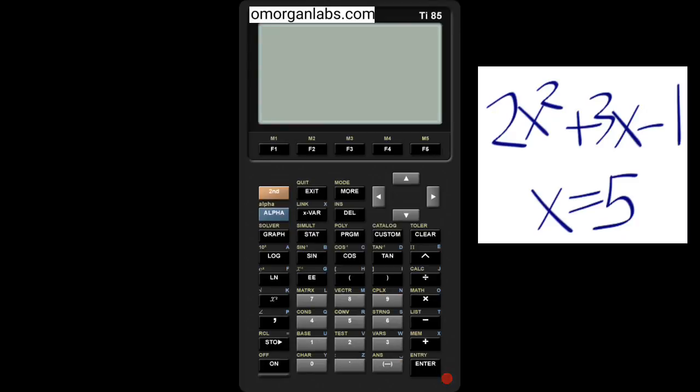Hello, this is O Morgan from O Morgan Labs. Today we are going to evaluate a function. The function is 2x squared plus 3x minus 1, and x equals 5.